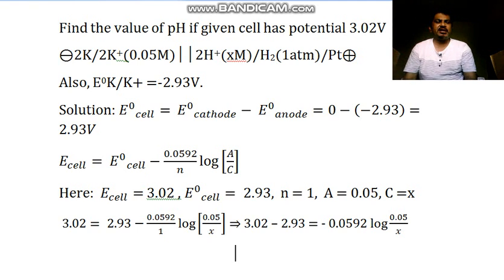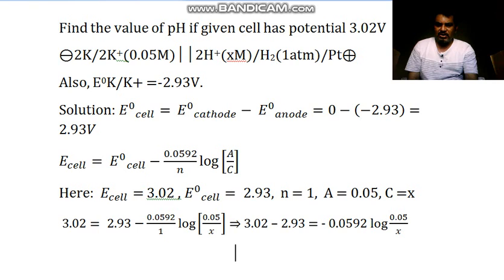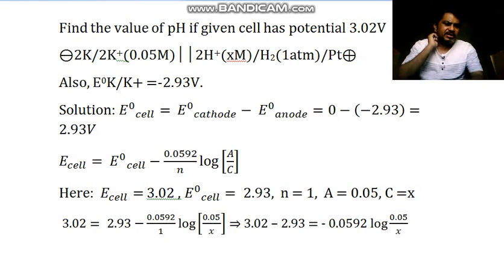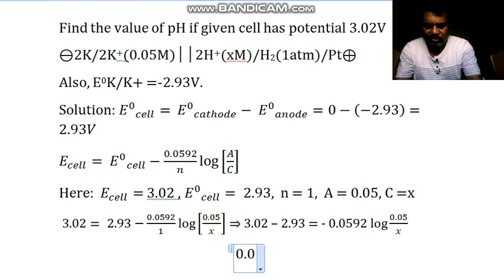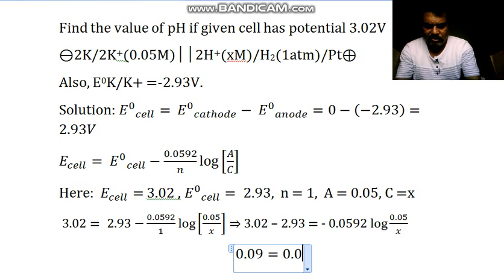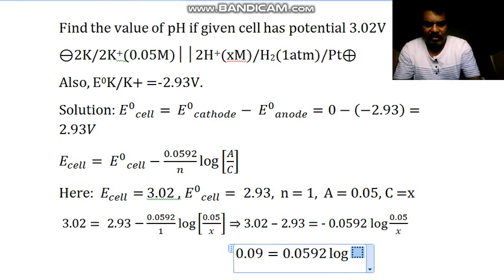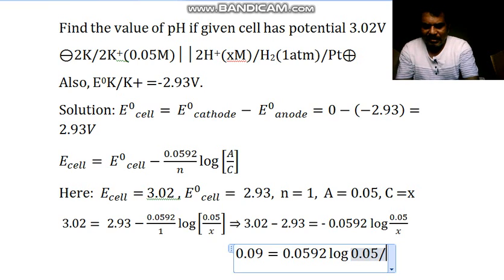So: 3.02 minus 2.93 equals minus 0.0592 times log of anode by cathode. Now, 3.02 minus 2.93 gives us 0.09. So we have: 0.09 equals 0.0592 times log of 0.05 divided by x.